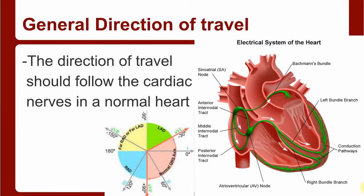The direction of travel should follow the cardiac nerves in a normal heart. So if you know your conduction system, you know which way this stuff is supposed to be flowing, and I've included a quick picture here of our degrees and axis.